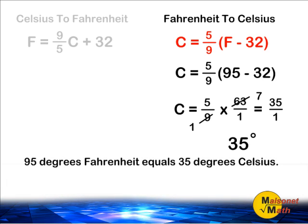So, when converting 95 degrees Fahrenheit to degrees Celsius, we come up with a temperature of 35 degrees Celsius.